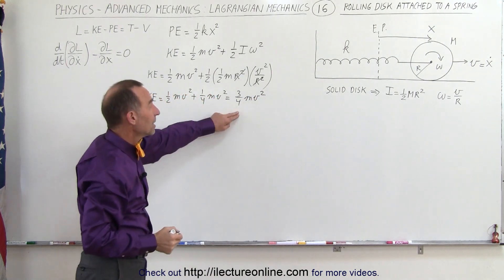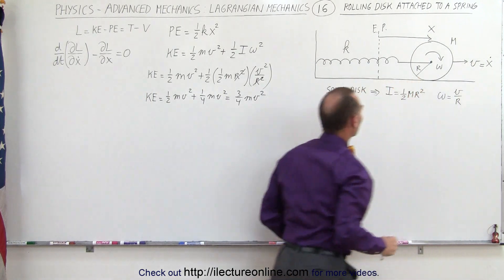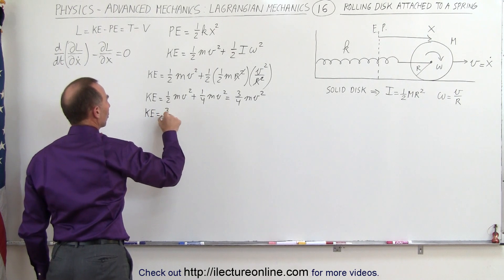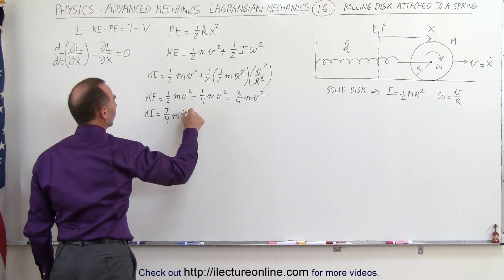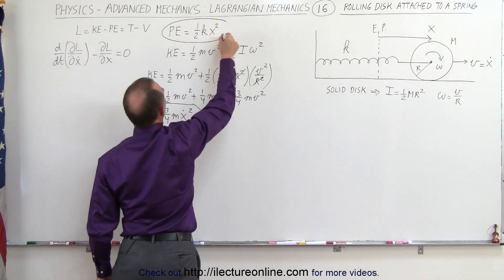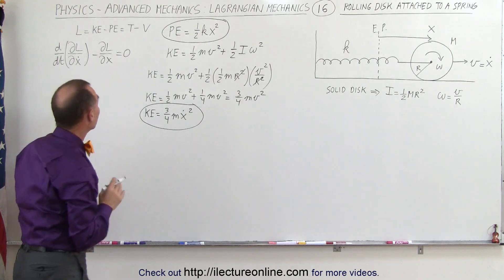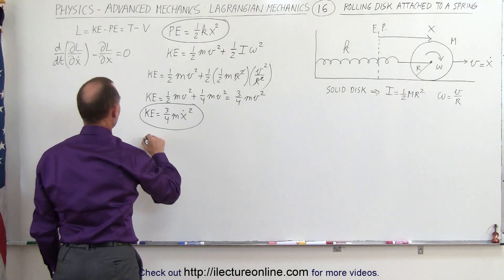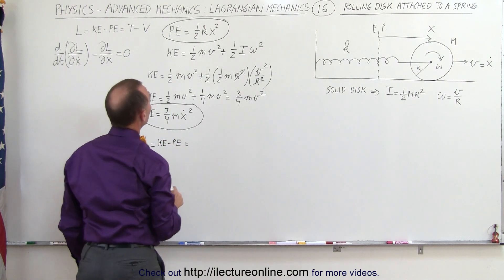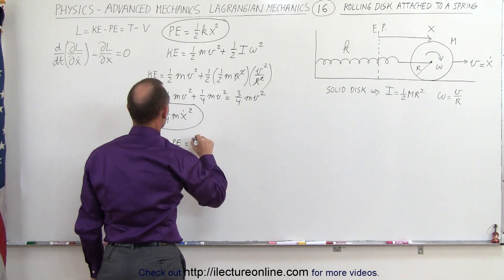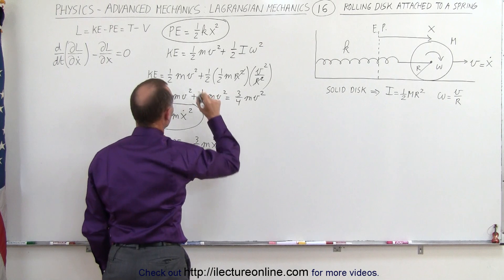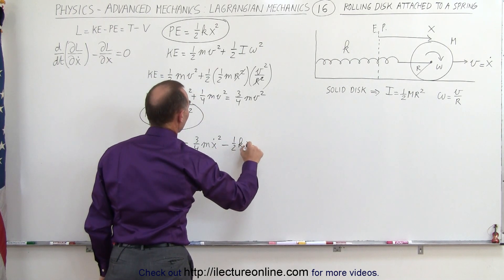Remember that v can be written as x dot, which means the kinetic energy can ultimately be written as three quarters m x-dot squared. So here we have the kinetic energy and here we have the potential energy. Now we're ready to write the Lagrangian: L is equal to kinetic energy minus the potential energy, which is three quarters m x-dot squared minus one half kx squared.